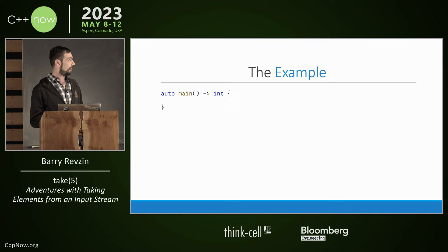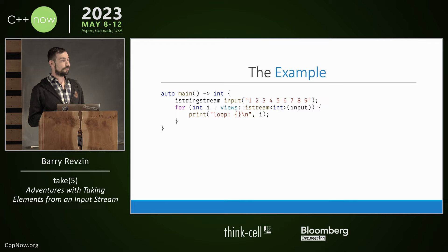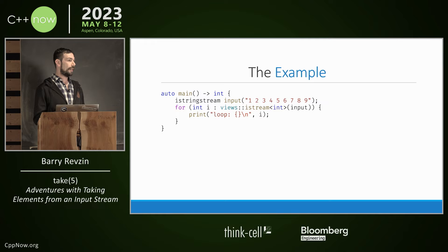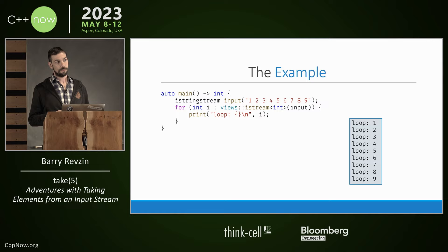This talk focuses exclusively on one fairly short example. We're going to start with an input stream — just a bunch of integers, nothing special. I'm going to construct an istream_view over it. Views::istream is a range factory: it takes a stream and a type, and gives you a range of elements of that type extracted lazily from that stream. If I run this loop, I'm going to print all the numbers one through nine, prefix of the loop.